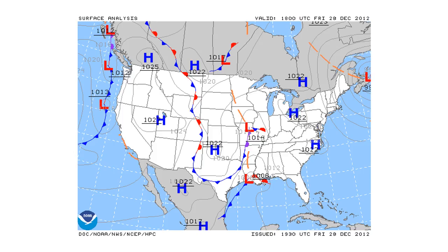Looking at the surface analysis chart, there are a lot of areas of high pressure around the United States — pretty much everywhere. We do have a low pressure system here with an occluded front along here.